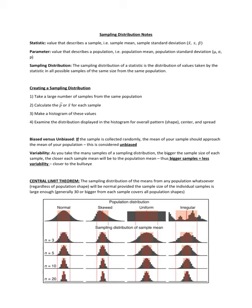First, just to understand a couple of terms you see more often now: a statistic is a value that describes a sample. The statistics we often see in the AP stats world are X-bar, S for standard deviation, and P-hat for a sample proportion. The corresponding parameters — the population measurements — are: mu (population mean), sigma (population standard deviation), and P (population proportion).